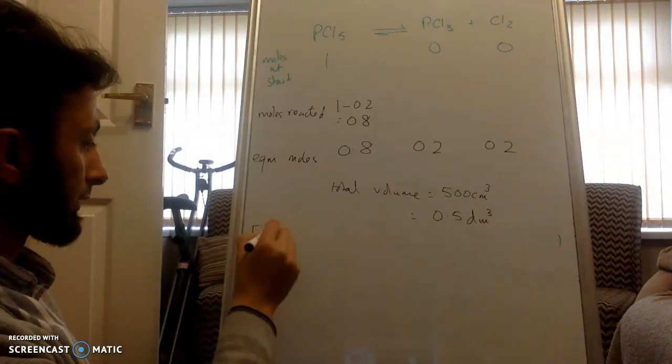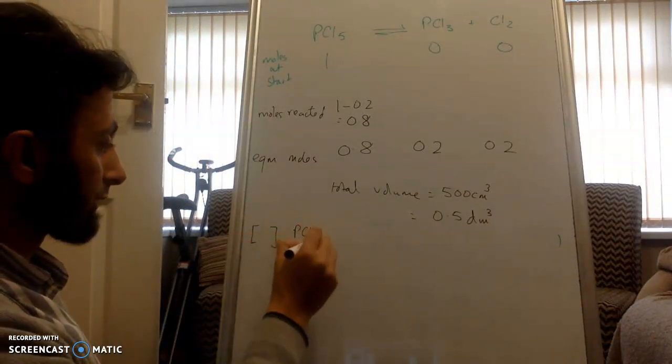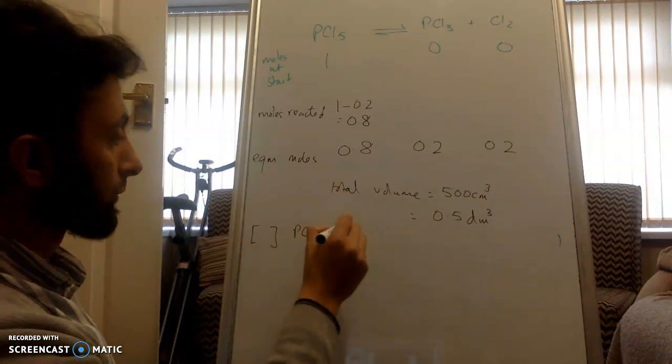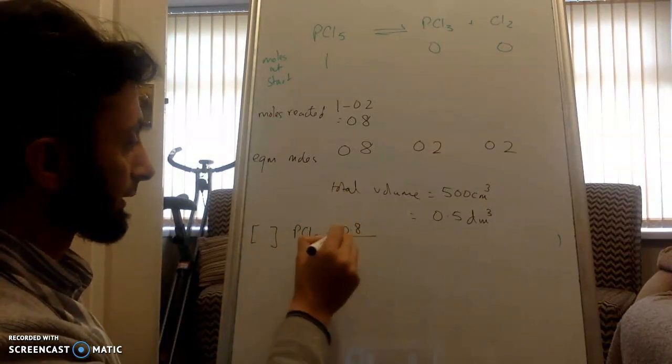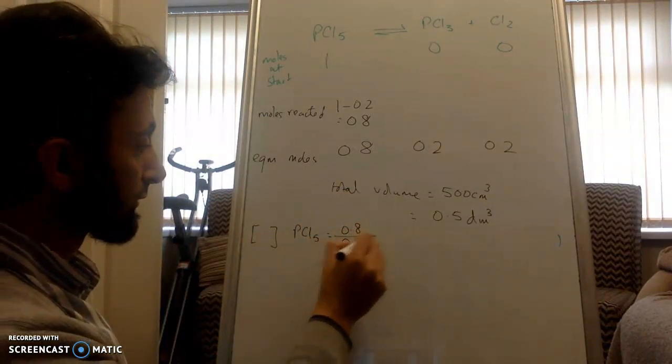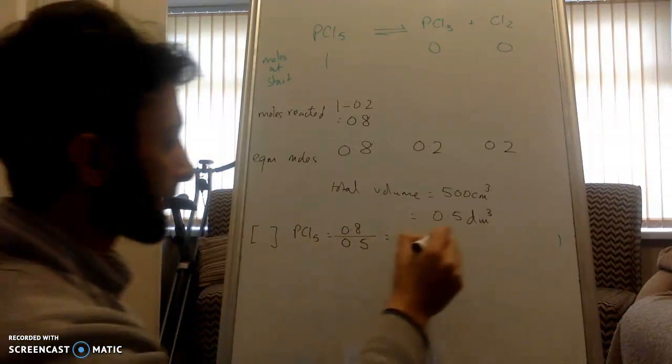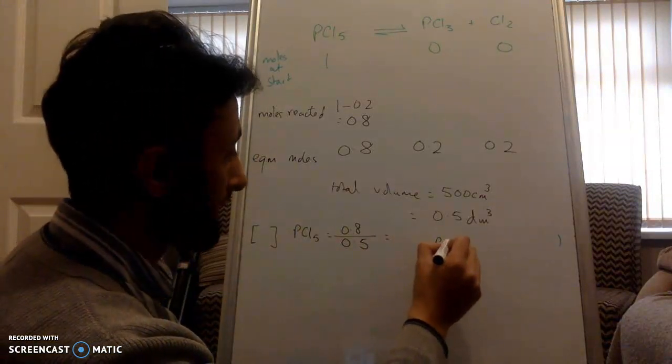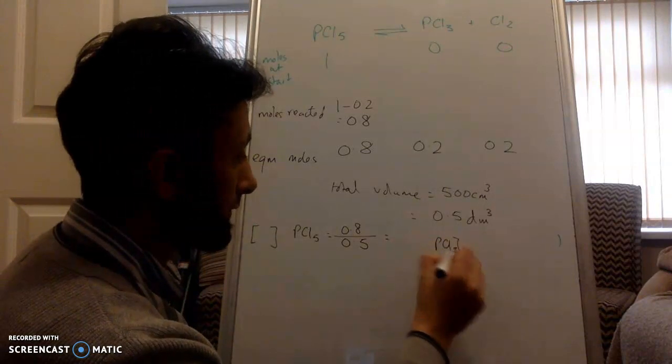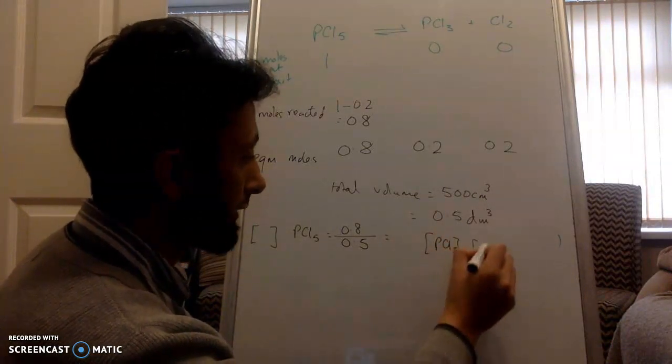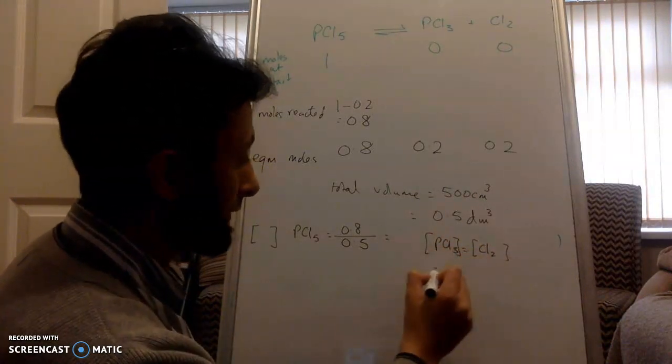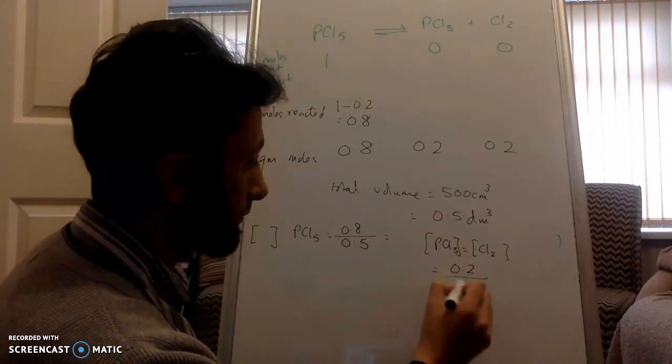So, concentration of PCl5 equals 0.8 over 0.5. Concentration of PCl3 equals concentration of chlorine, which is 0.2 over 0.5.